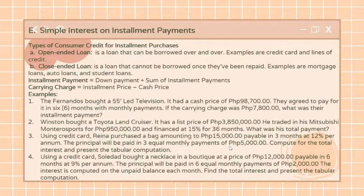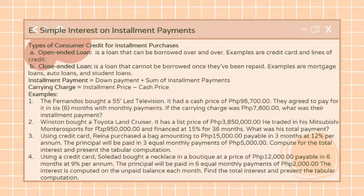If the borrower needs more money, he or she needs to apply for another loan. Common types of close-ended loans include mortgage loans, auto loans, and student loans. If the consumer purchases an item in an installment loan, you agree to pay off the loan by making equal payments at regular intervals for a specific period of time. The loan is said to be amortized if it is completely paid off by this payment scheme.